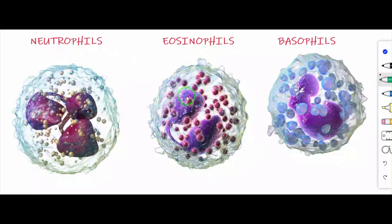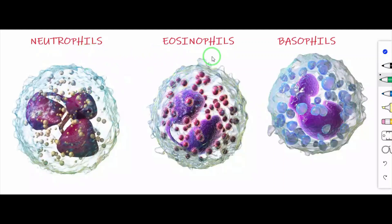Eosinophils bring about detoxification of toxins. The third granulocyte is basophils. Basophils have a lobed nucleus — only one lobe — and form 0.5 to 1% of the total leukocytes. Basophils release chemicals during the process of inflammation. So, the three types of granulocytes are neutrophils, eosinophils and basophils.